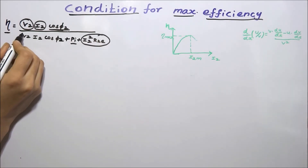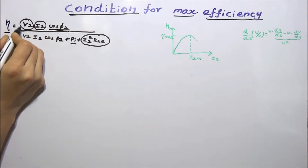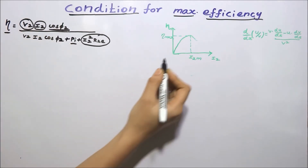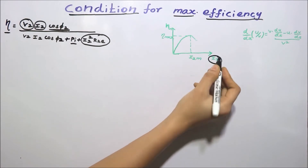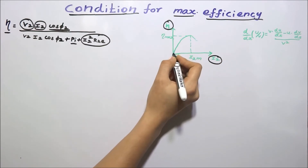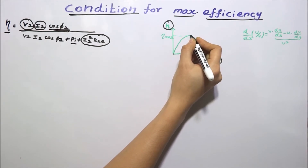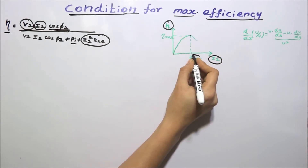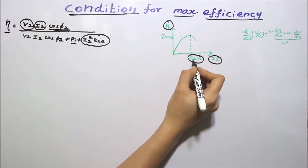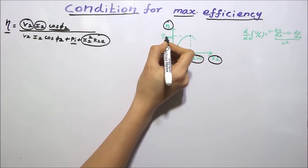In this equation, the efficiency is a function of I2, assuming the terminal voltage and the power factor as constant parameters. We will now plot the graph between the load current I2 and the efficiency. As the load increases, the load current increases, and at a particular point the efficiency reaches its maximum value. The load current at which efficiency is maximum is denoted as I2M, and the corresponding maximum efficiency is denoted as η_max.